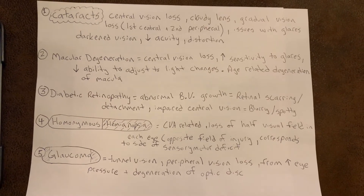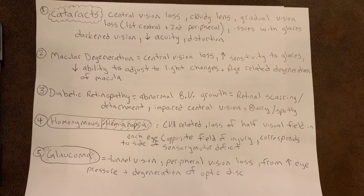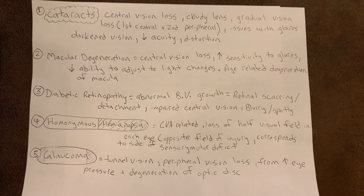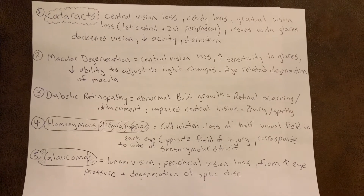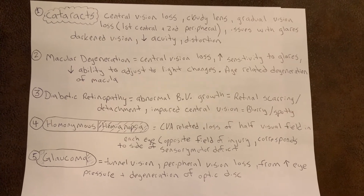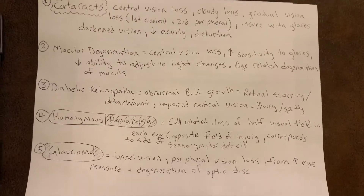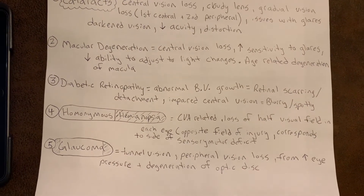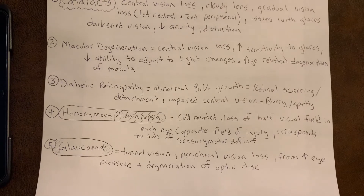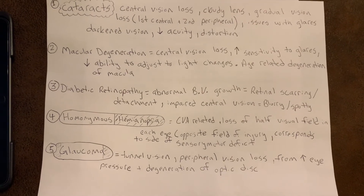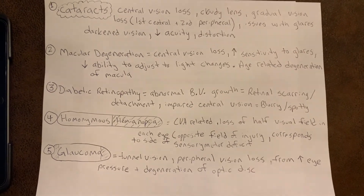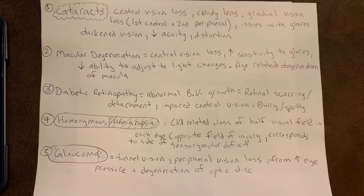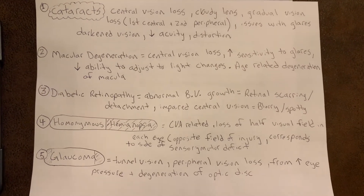Finally, the fifth type of vision loss is glaucoma, which presents as tunnel vision. You lose vision on the periphery and can only see down the center, like looking through a dark tunnel. It's a peripheral vision loss caused by increased eye pressure and degeneration of the optic discs.